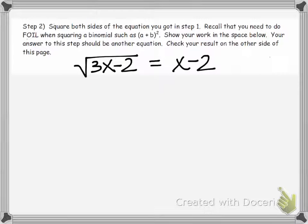In step 2, our goal is to square both sides of the equation from the previous step. The reason we're doing this is because we want to eliminate the radical sign.